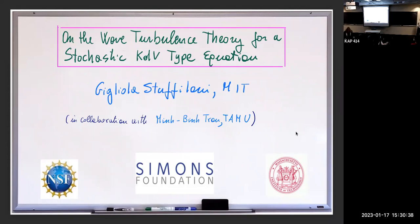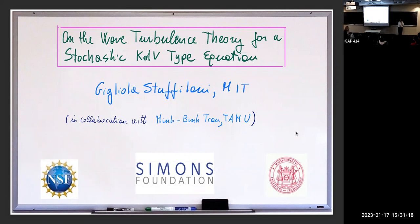Welcome everybody to our second Distinguished Lecture today. We're delighted to have Giliola Staffilani from MIT, about whom you can read very much that is extremely positive when you look at the web. She is a very distinguished mathematician and we're delighted to have her with us today. She will talk on the wave turbulence theory for a stochastic KDV-type equation. And to remind everybody that there is more food, wine and cheese after the talk.